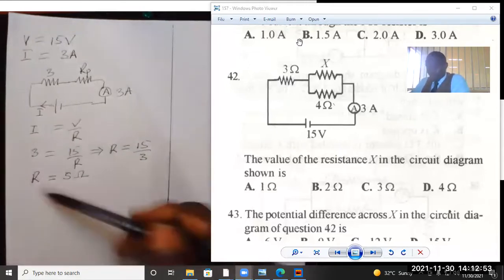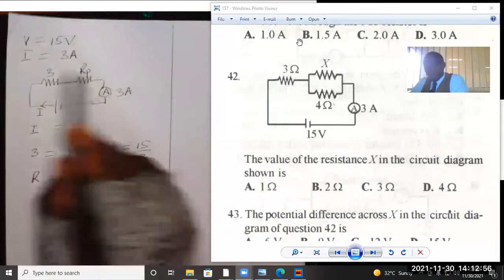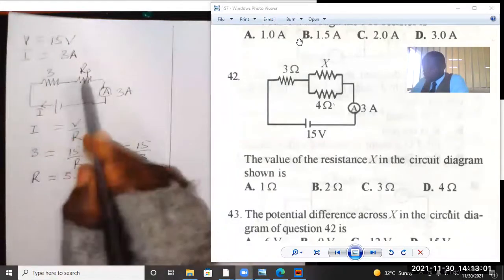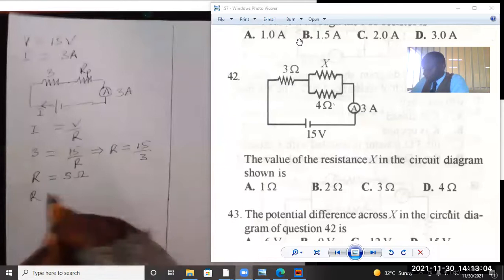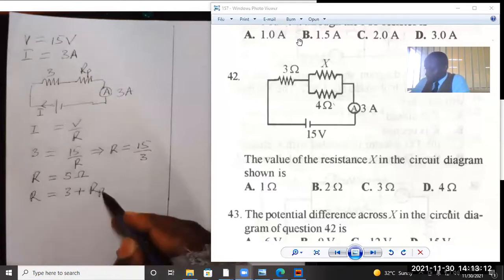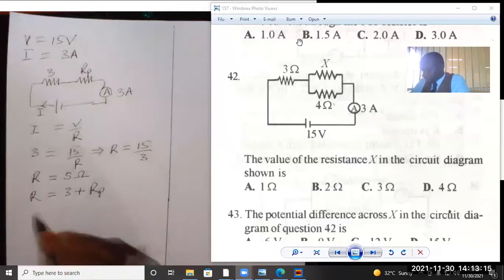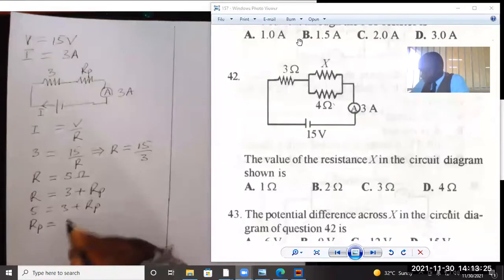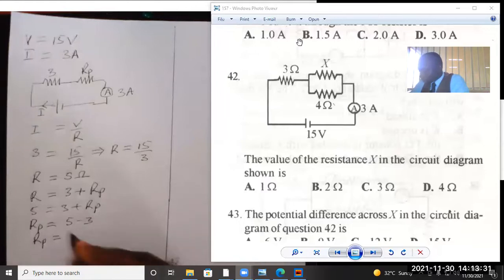This is 5 ohms. This is the effective resistance, the total resistance of this combination. These two resistors are in series. So R is equal to 3 plus RP. This R is 5, so 5 equals 3 plus RP. Then we can make RP the subject of formula. RP equals 5 minus 3. The effective resistance in parallel is 2 ohms.